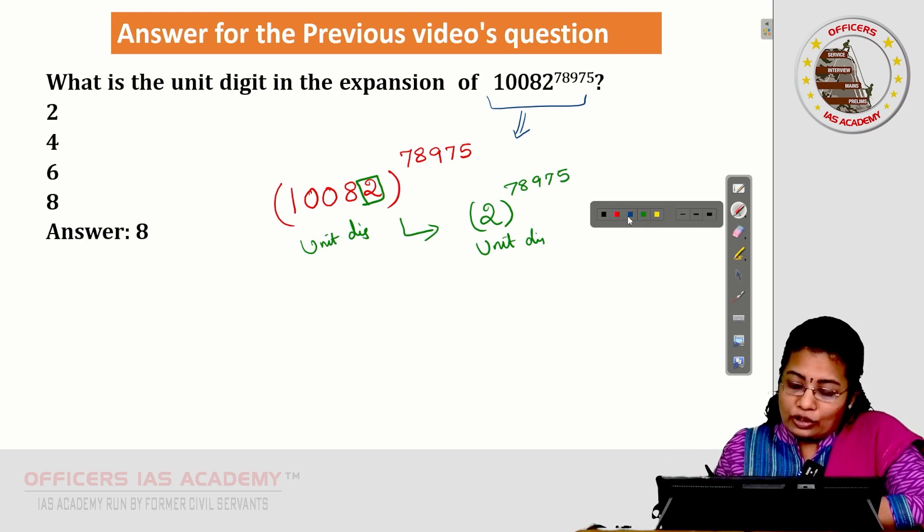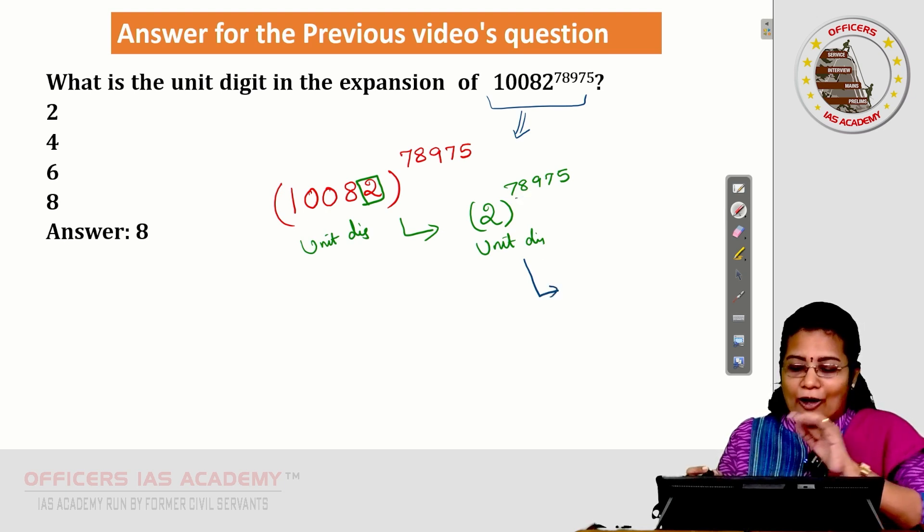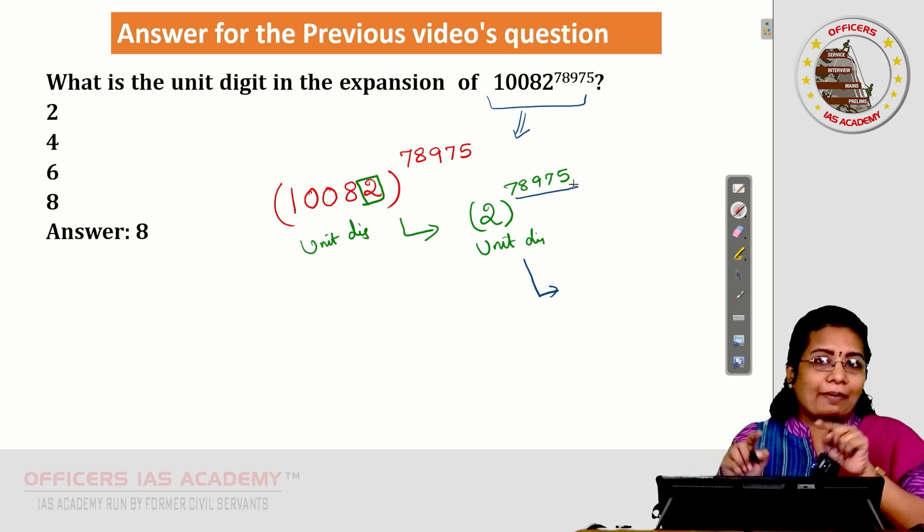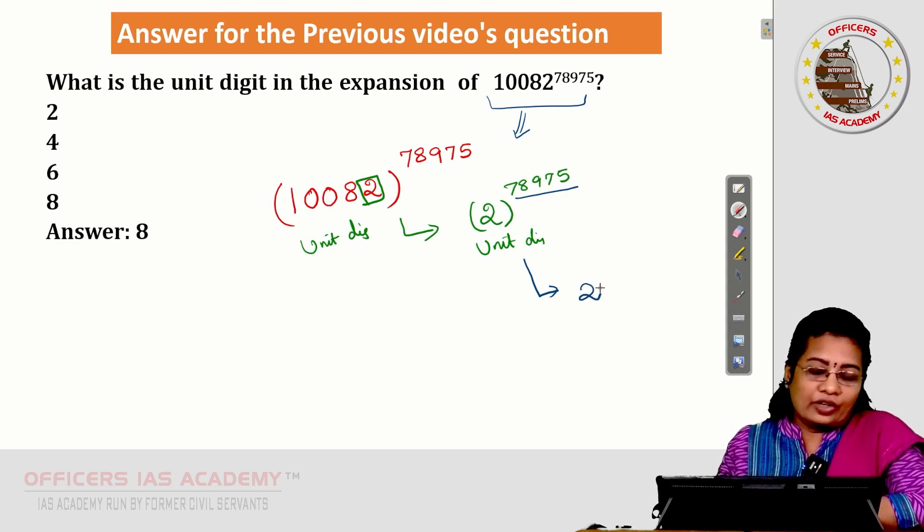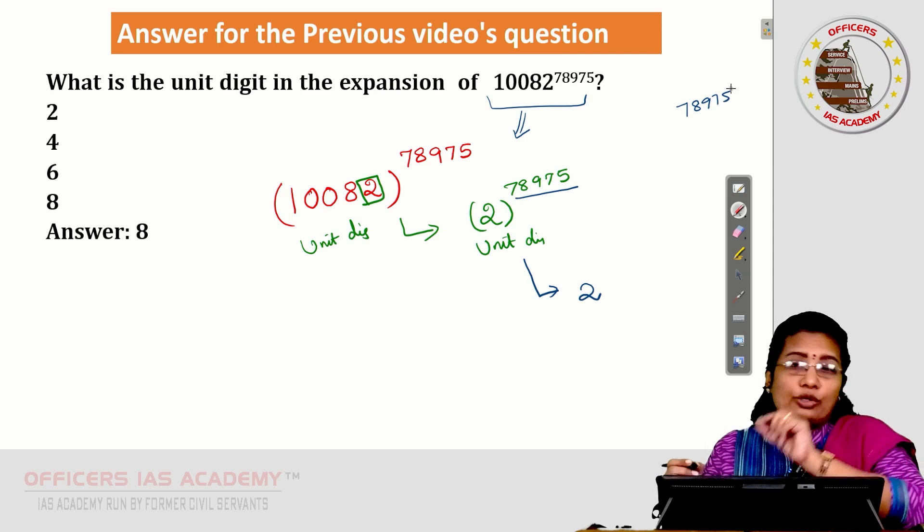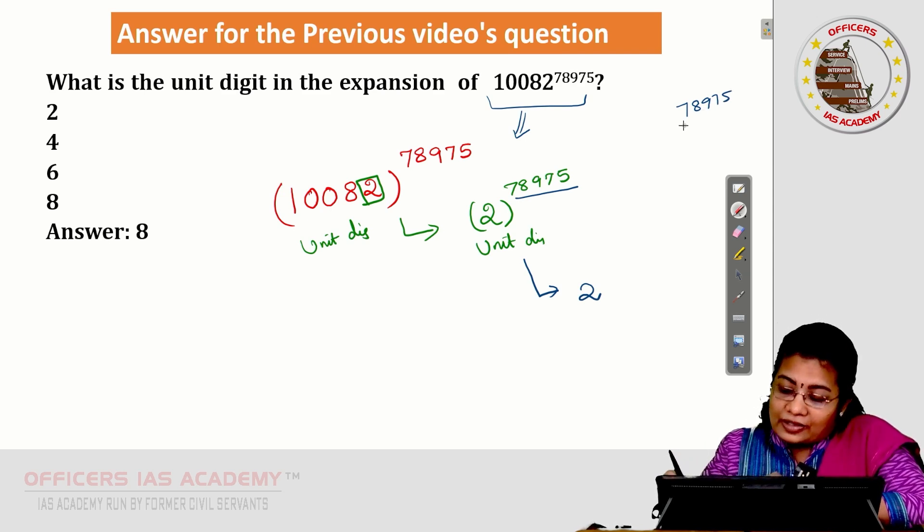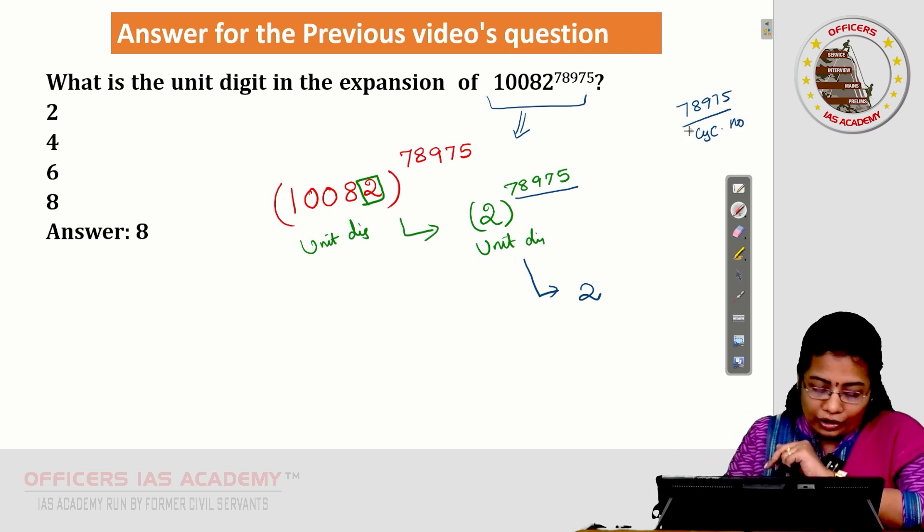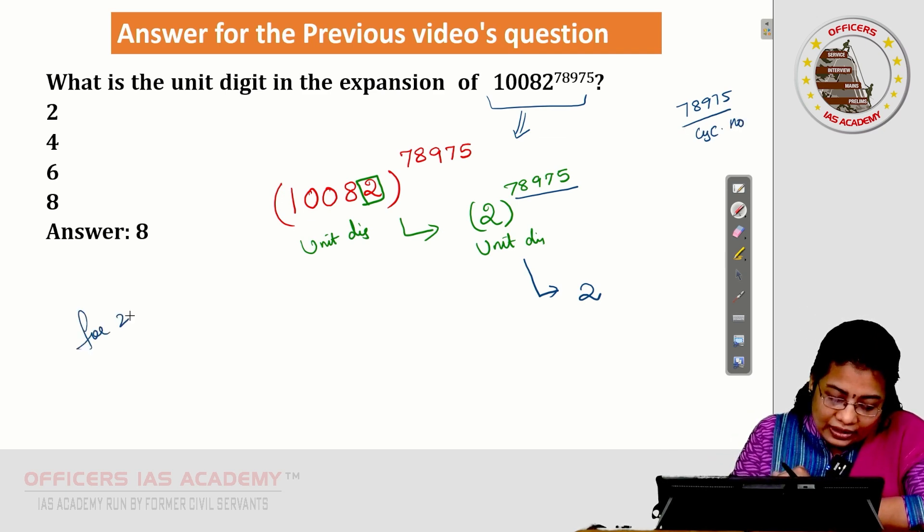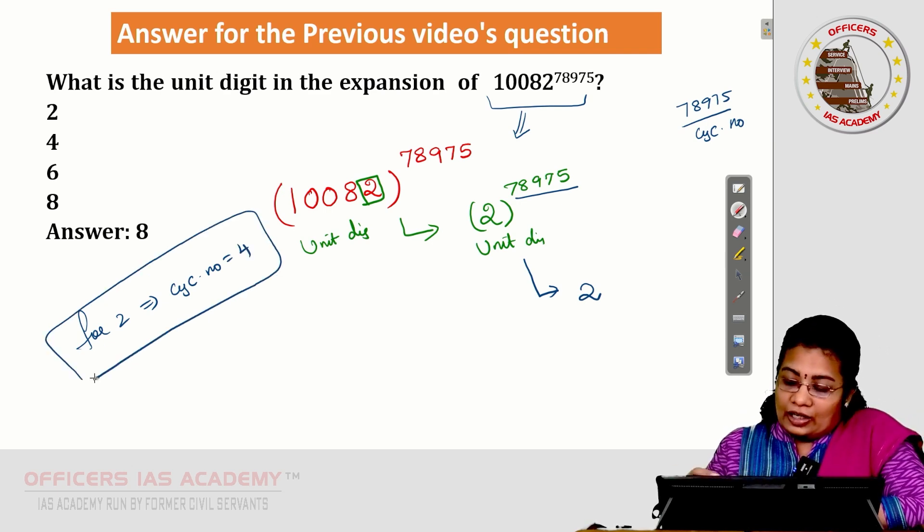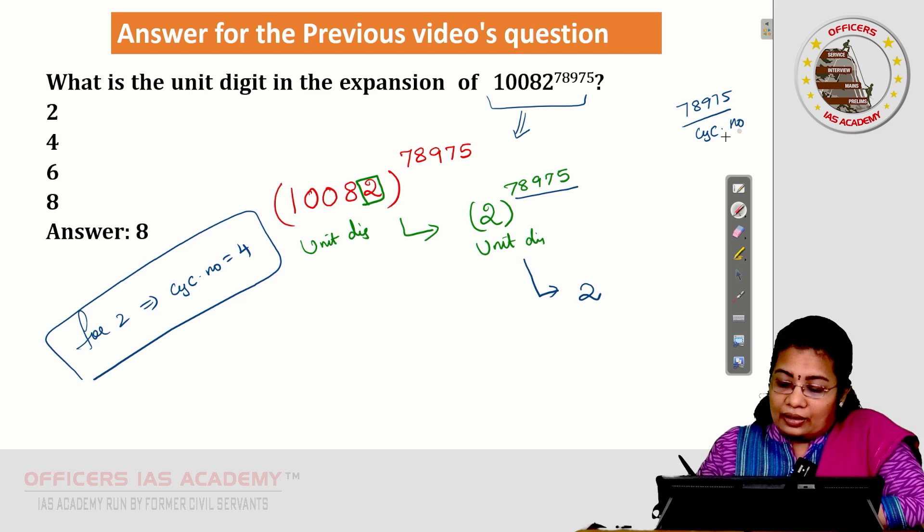Next step, I want to simplify this power. I have simplified the base into a single-digit number. The power part I want to simplify now. I have taken 2 to the power 78,975. I want to reduce into a smaller value. What is the idea? Divide with the cyclicity number. What is the cyclicity number for 2? For 2, the cyclicity number is 4. These things are discussed in the previous video.